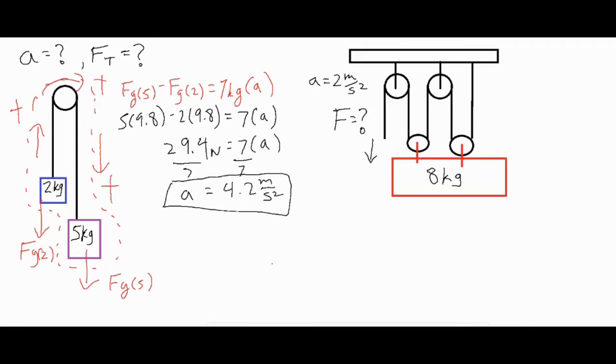Now if you wanted to find the FT, you can find the FT in two different ways. What you want to do is take a look at each individual object. We don't want to look at this as one big seven kilogram system because we don't have any FT because the FT is internal, it's inside of our system.